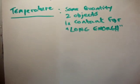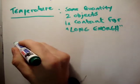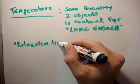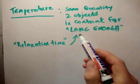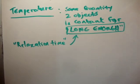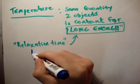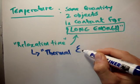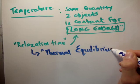When two objects are in contact for long enough, it takes the relaxation time. After the relaxation time, they would be at the same temperature. So long enough is the relaxation time. You put a hot body and a cold body together, and after the relaxation time, the property which they have that is the same would be the temperature. The temperature is the same for two objects after the relaxation time has elapsed. Once the relaxation time has elapsed, we say that the two bodies are in thermal equilibrium.